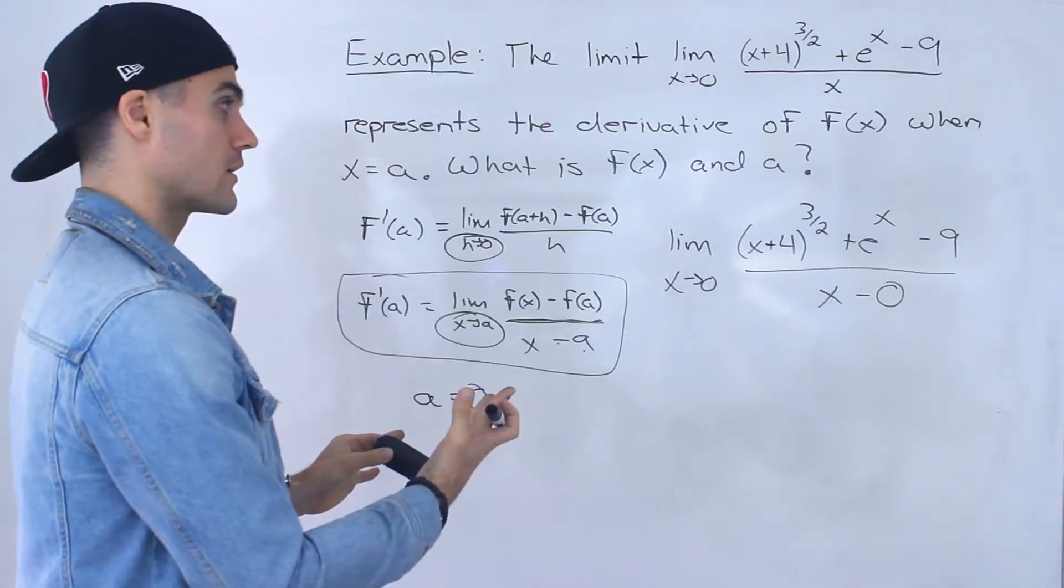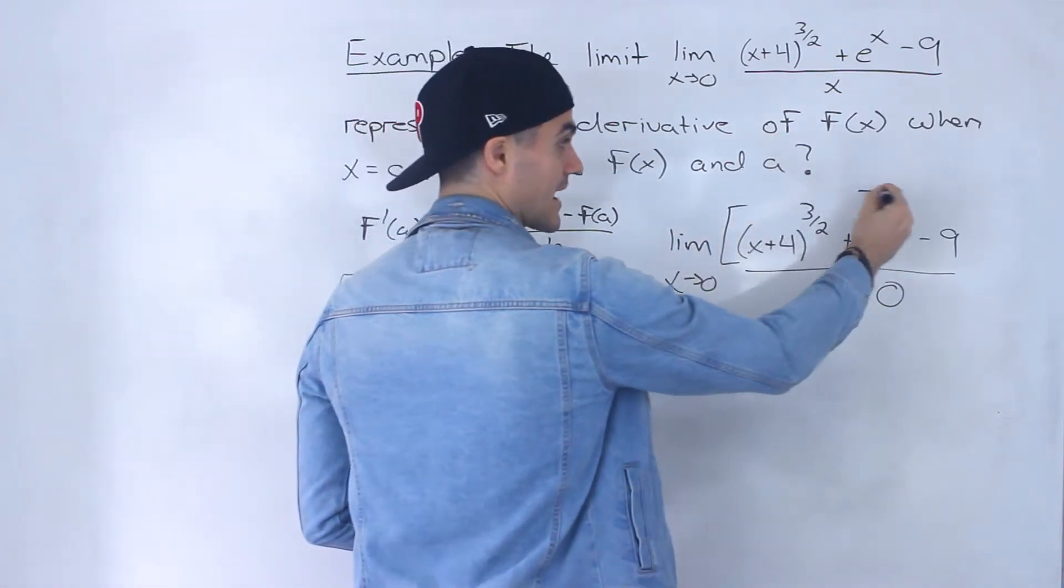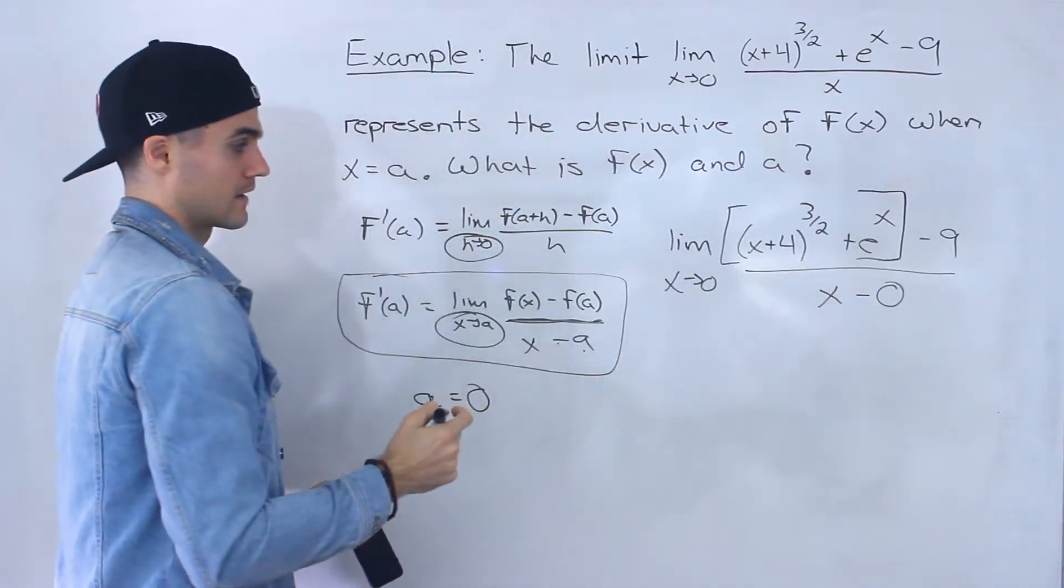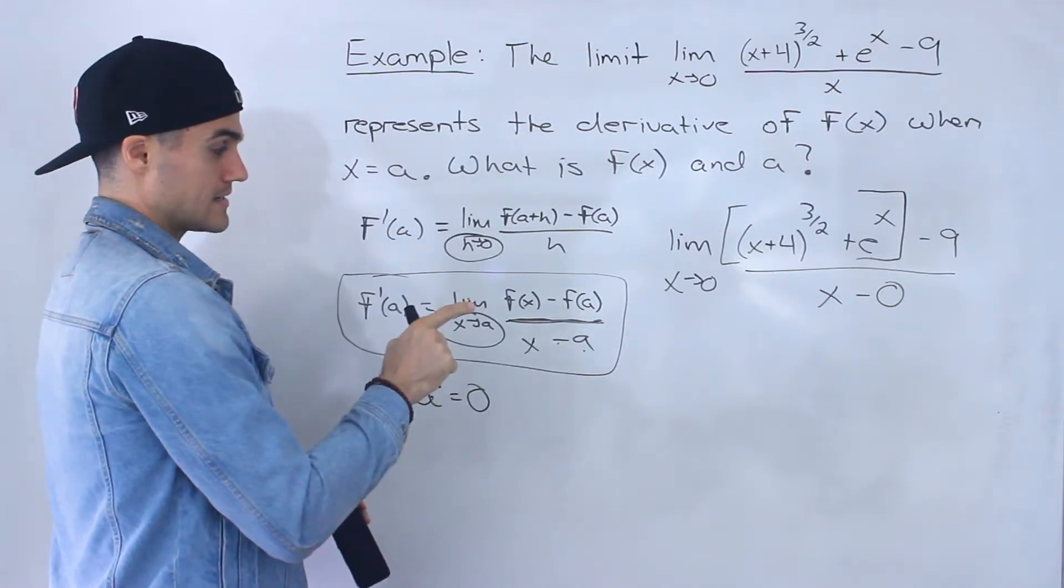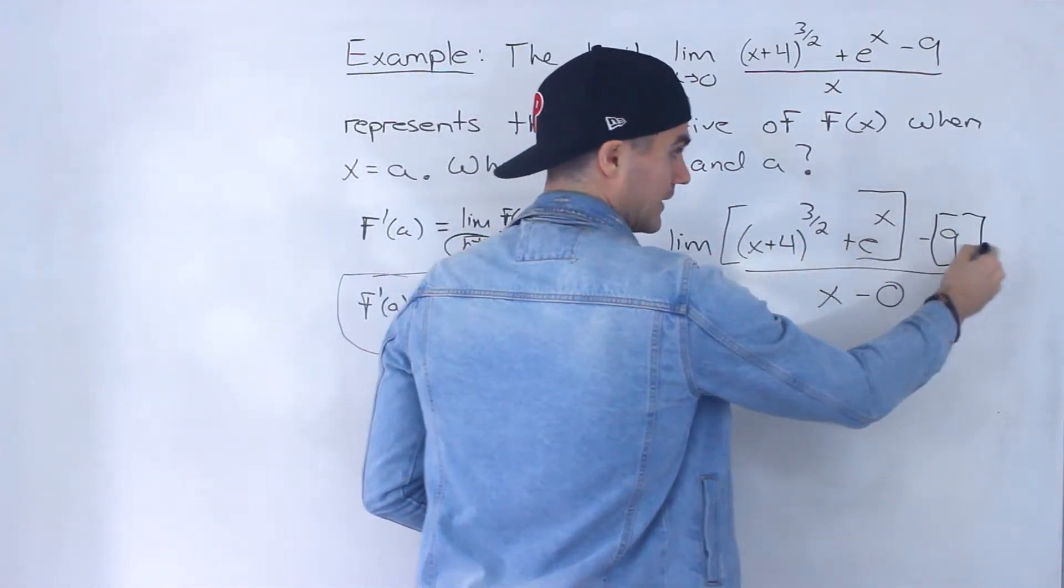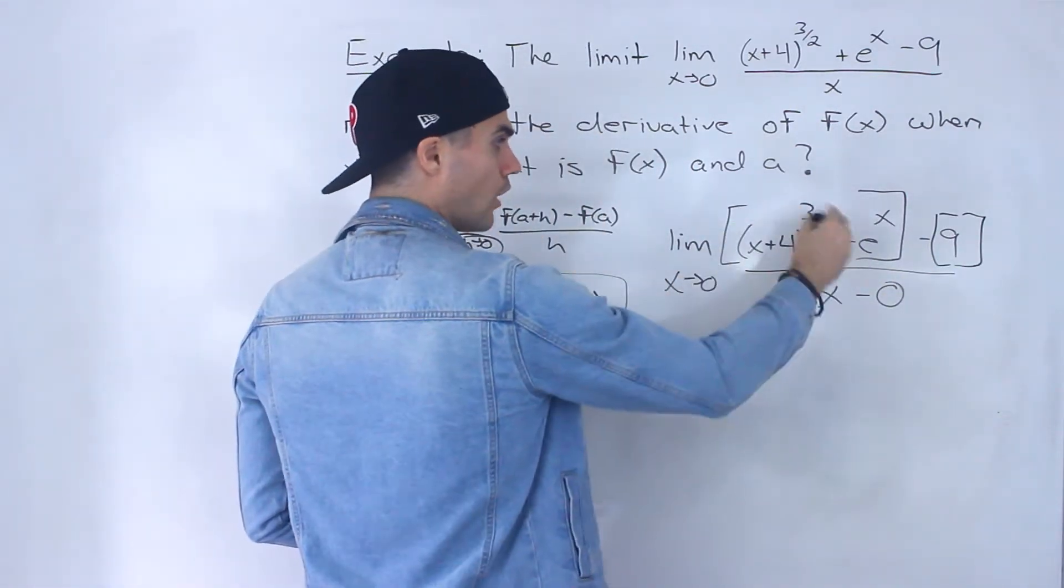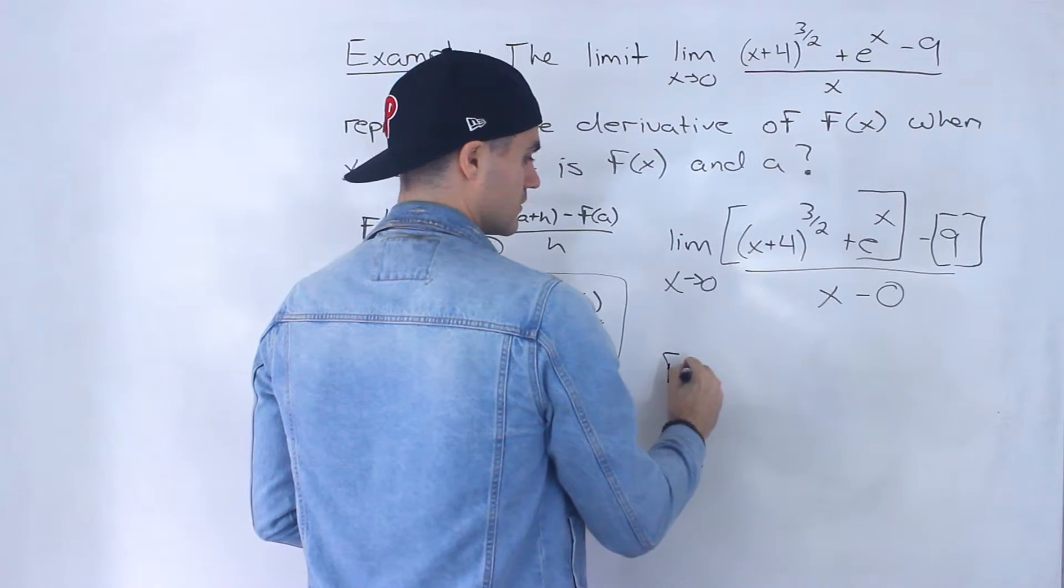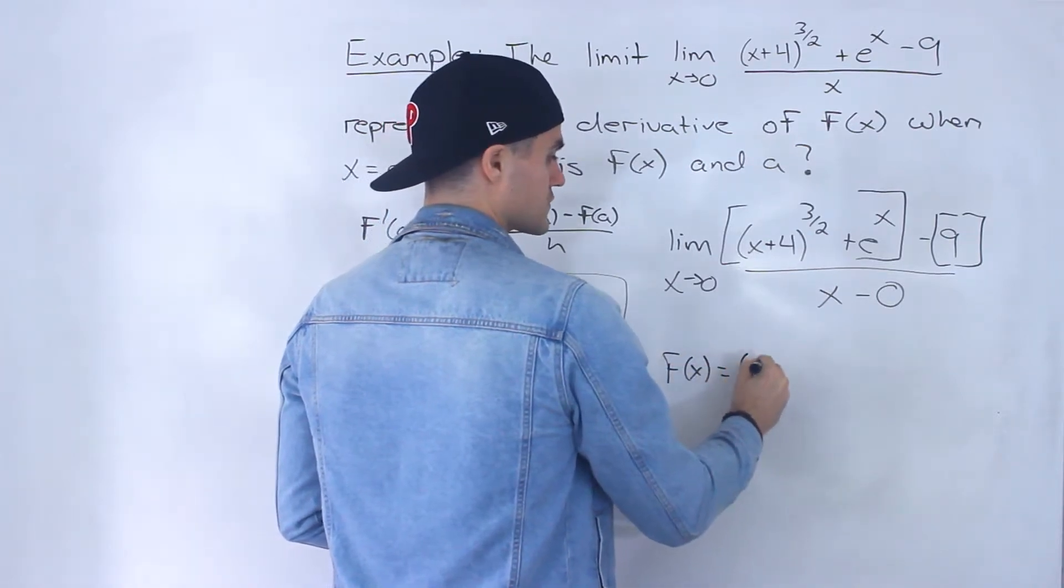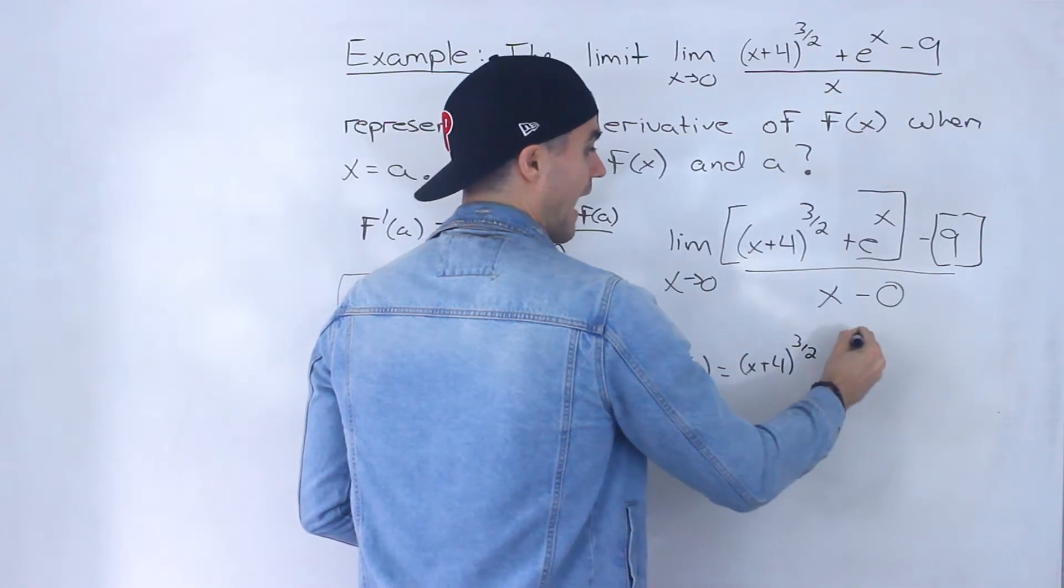Hopefully you could tell from here what's the function. Well the function is basically everything that has an x value, all of that. And then what is the f(a)? Well it's this 9 here. And it makes sense because if all of this is the function f(x) = (x+4)^(3/2) + e^x, well f(a), the a value is 0 in this case.